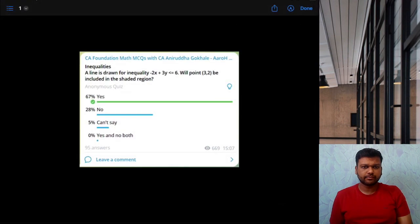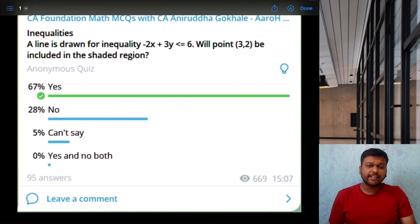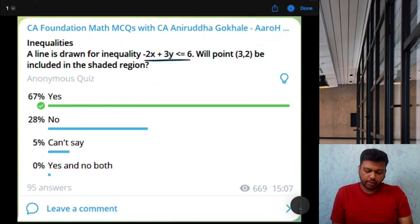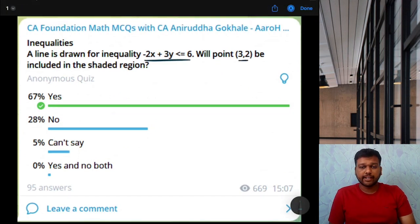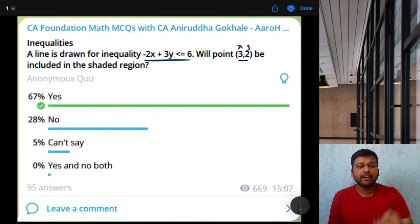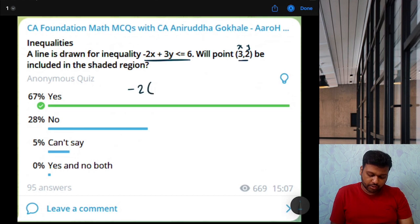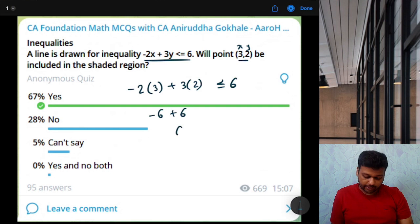Next. A line is drawn for inequality. This. Will 0, 3, 2 be included in the shaded region? There is a very easy way to solve this. 3 is x. 2 is y. So, substitute that in the equation. x is minus 2 into 3. Plus 3y is 3 into 2. Check if it is less than or equal to 6. So, this is minus 6 plus 6. That is 0. Is 0 less than or equal to 6? Yes. So, yes is the correct answer.